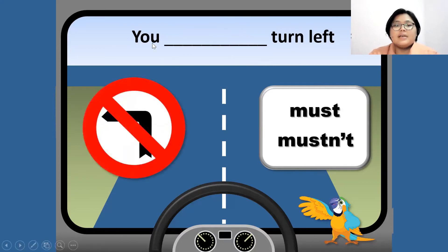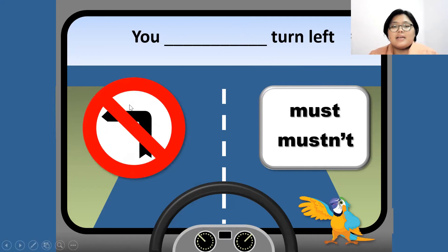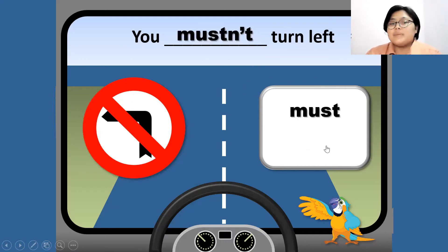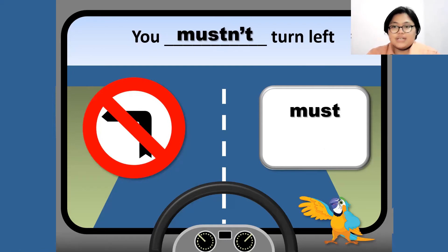Next, we have: 'You blank turn left.' Look at the sign — it has red on it. What do you think the answer — must or mustn't? The answer is mustn't. You mustn't turn left.